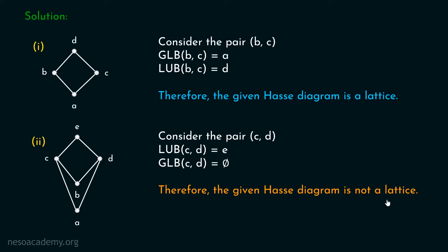Why did we come to this conclusion? It is simple. We have to consider every possible incomparable pair of elements, and if for any pair the least upper bound or greatest lower bound does not exist, then it is clear that the Hasse diagram is not a lattice. Here, for the pair C, D, the least upper bound exists but the greatest lower bound does not exist. Hence, the given Hasse diagram is not a lattice.